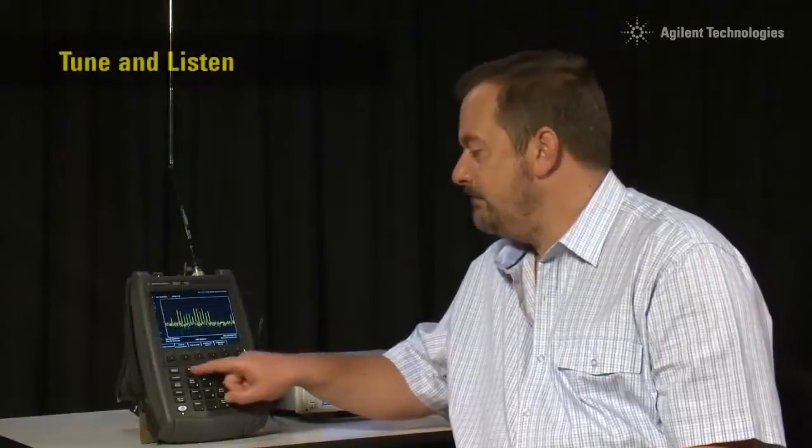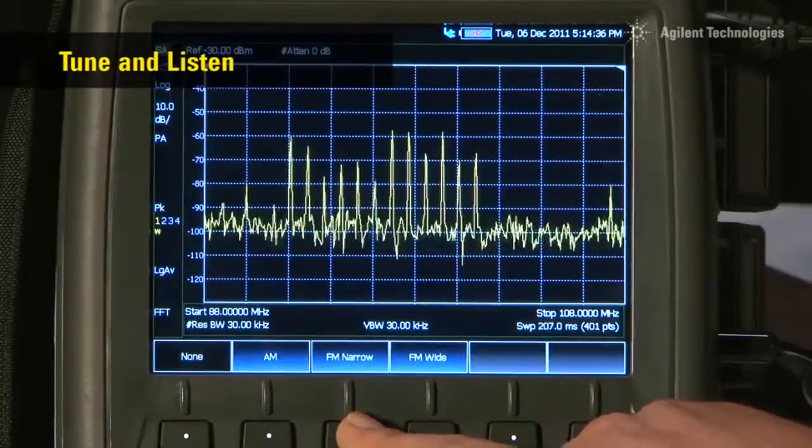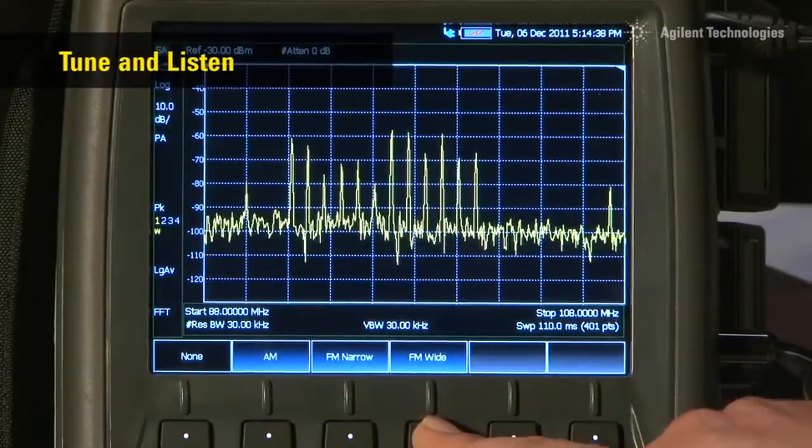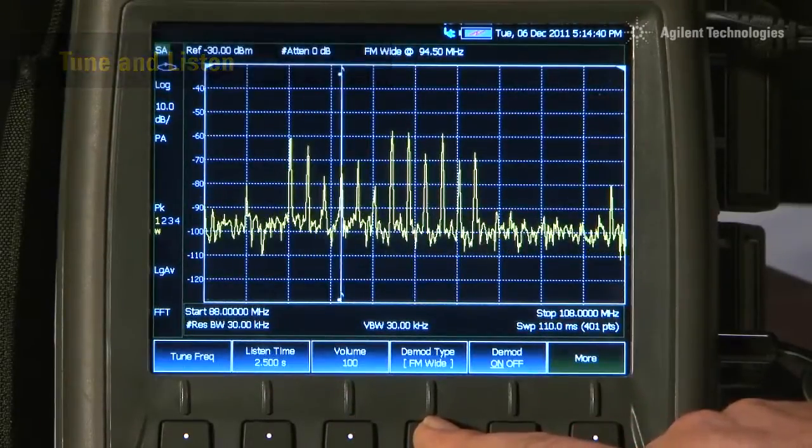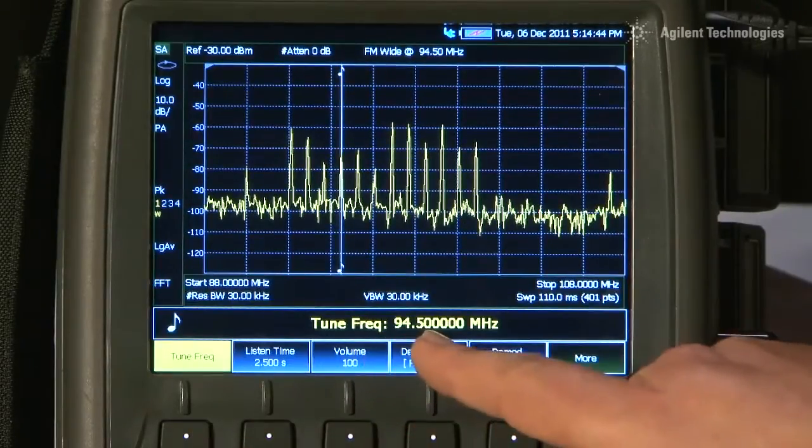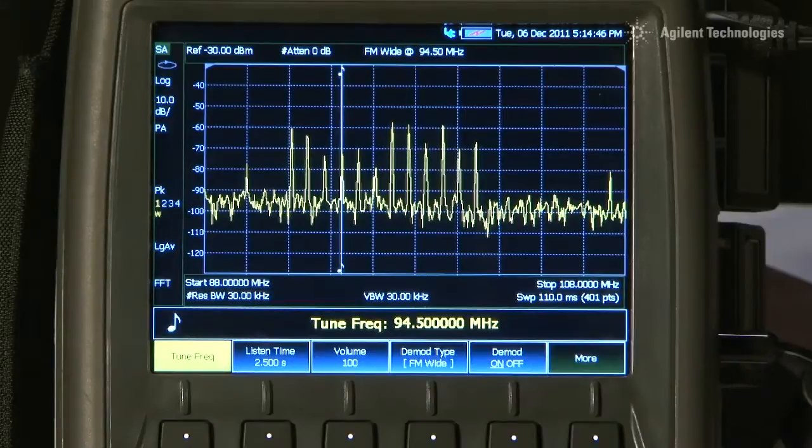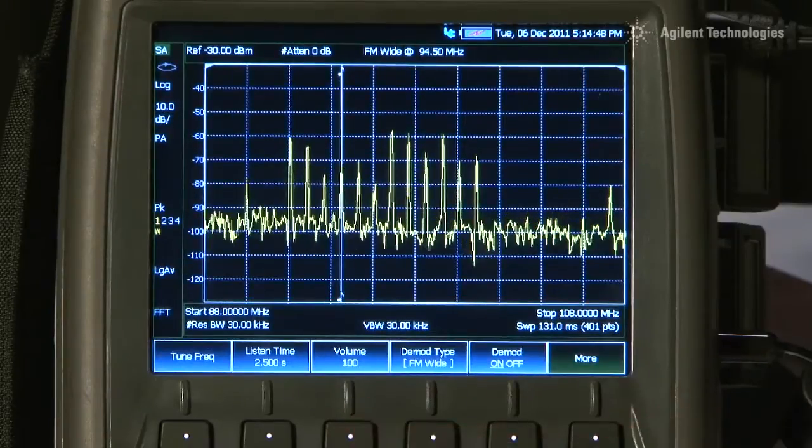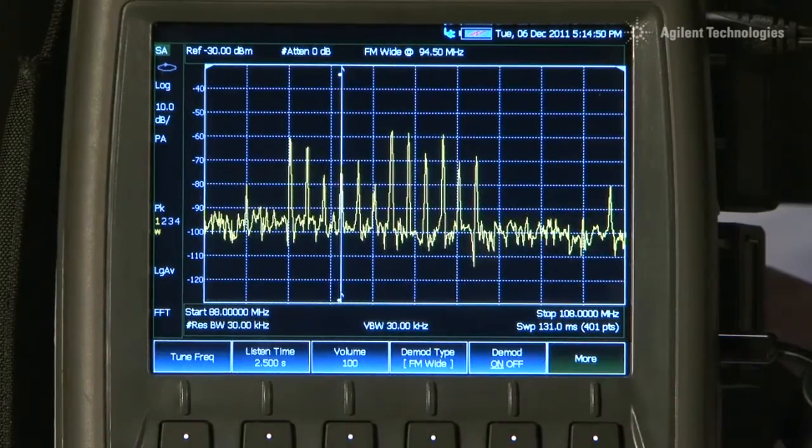If I press the measure button and then select tune and listen, FM wide, we can now select the tune frequency, currently set to 94.5 MHz, and as you can hear, we can now demodulate the transmission.